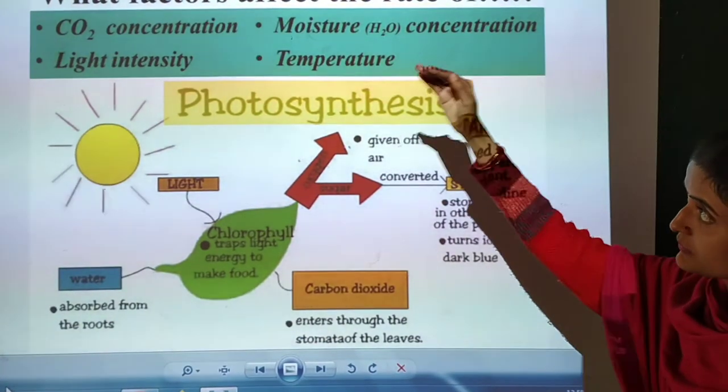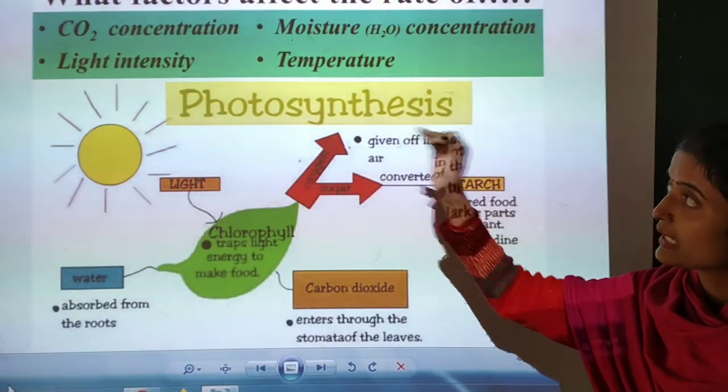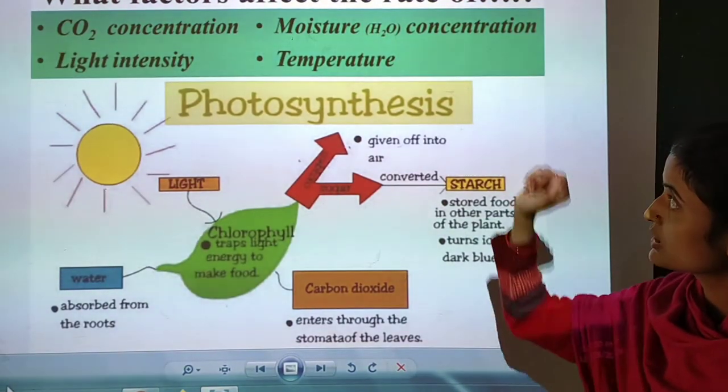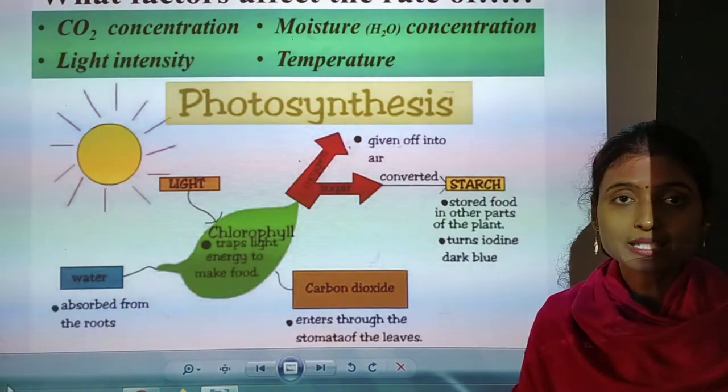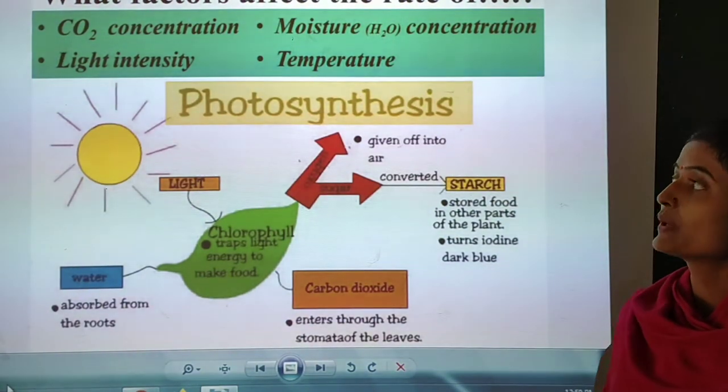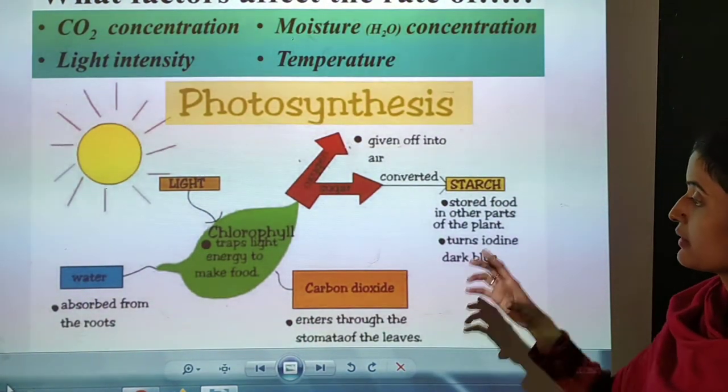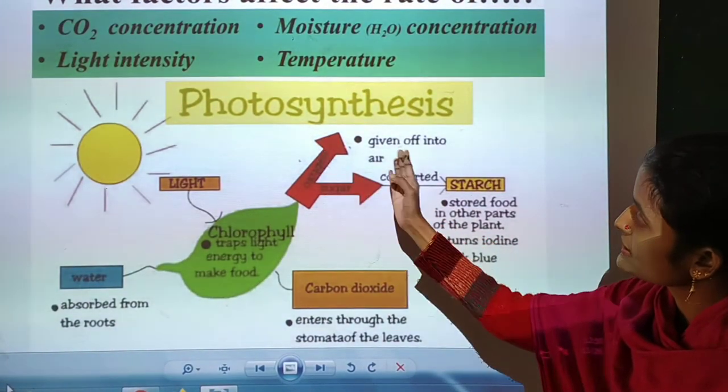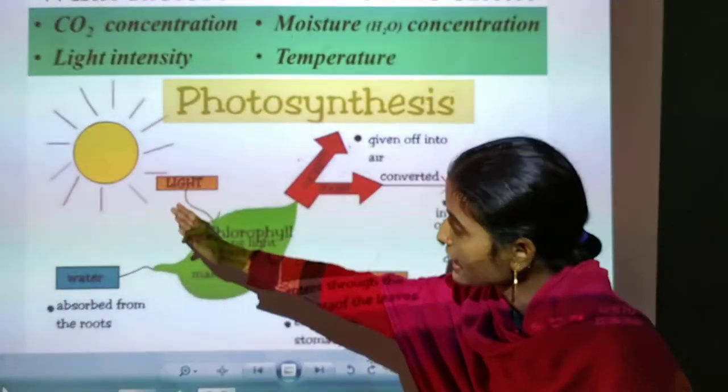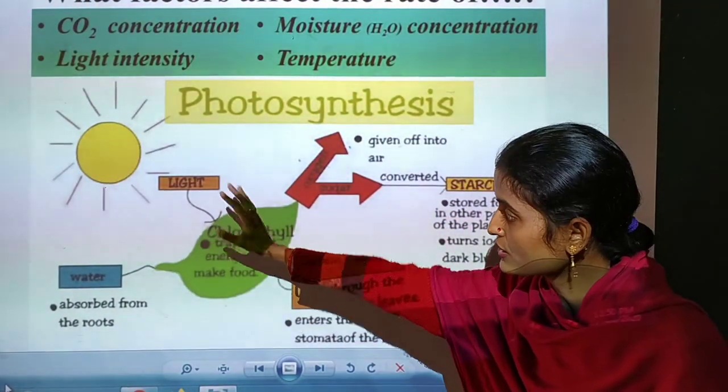Isn't it clear? See here: four factors affect the carbon dioxide concentration, moisture (that means water concentration), light intensity, and the last one temperature. See here, four factors affect photosynthesis. Here it is mentioned photosynthesis. See, this is the sun, and this one only produces solar energy.